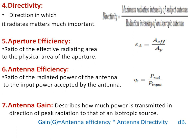Then antenna gain — gain is a desired quantity so it should be high. It describes how much power is transmitted in the direction of peak radiation compared to that of an isotropic antenna. It is related to directivity. The formula is: gain equals antenna efficiency multiplied by antenna directivity. This gain is defined in terms of decibels, or dB.